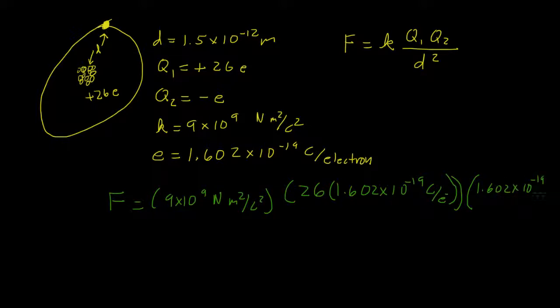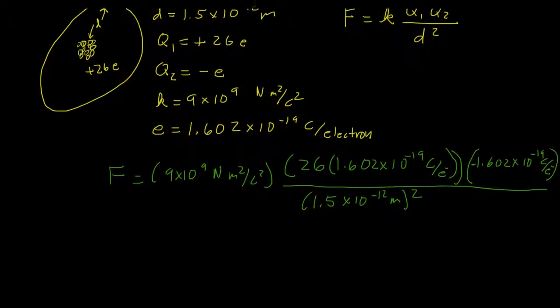That's negative, that's q2, negative because it's an electron. And then we'll divide all of this by 1.5 times 10 to the negative 12th meters squared. That's d squared.